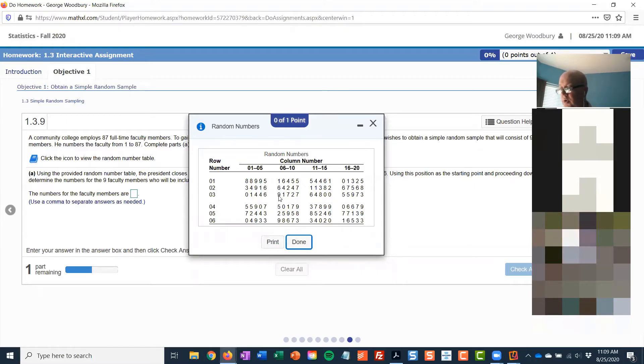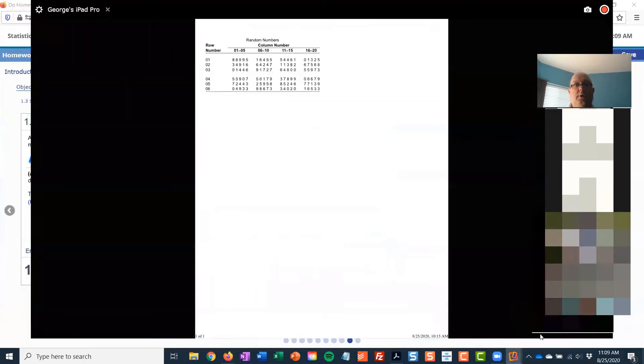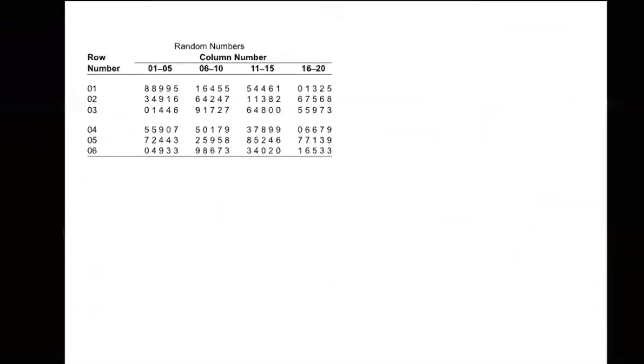I'm going to switch over to—I printed this column up so that I can write on it. Again, we're looking for a sample of size nine, and the numbers are from one to 87.